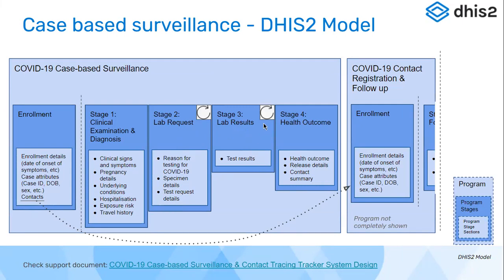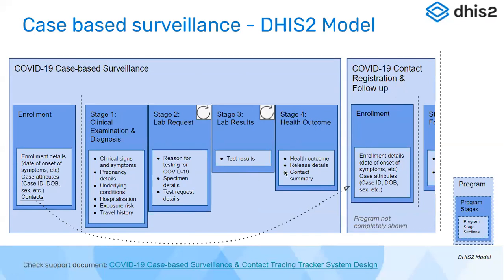Stage three was lab results, which was also repeatable. For each lab request added for the COVID-19 test, a corresponding lab result stage was added with information on the test results. Based on the information collected in stages one, two, and three, the health outcome was recorded at the end of 14 days — the normal cycle for the virus — including release details and a summary of the contacts traced for that patient. This was the DHIS2 data model configured for the COVID case surveillance and laboratory investigations program.